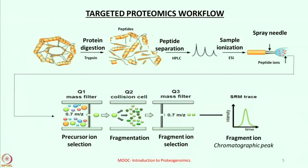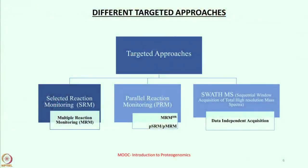The targeted workflow differs from the shotgun workflow in the fact that the instrument here has been much better instructed to selectively monitor only a few peptides. Before we look at the principle of selected reaction monitoring and how it works, there are three main branches of targeted approaches: the first is selected reaction monitoring, the second is parallel reaction monitoring, and the third is SWATH MS.